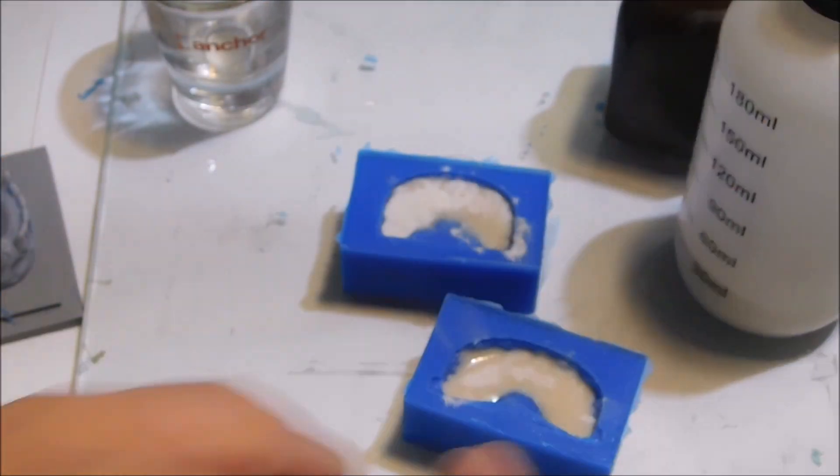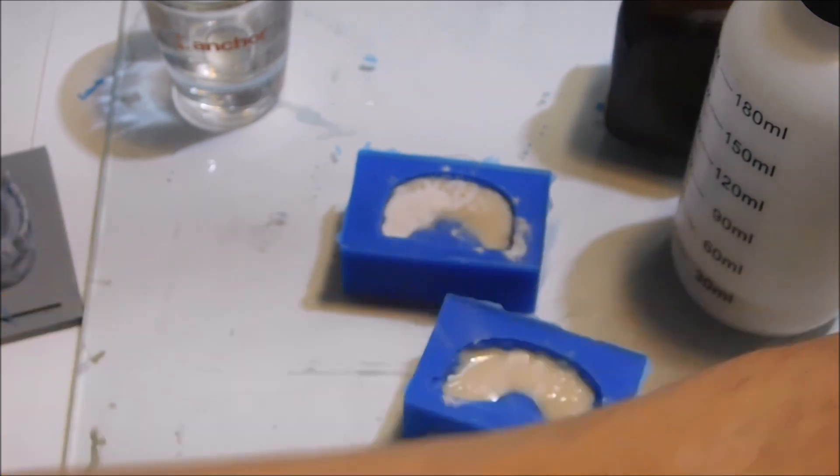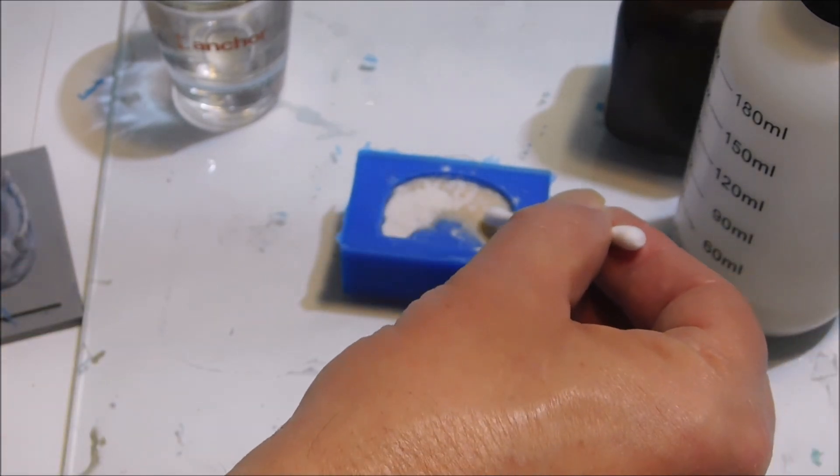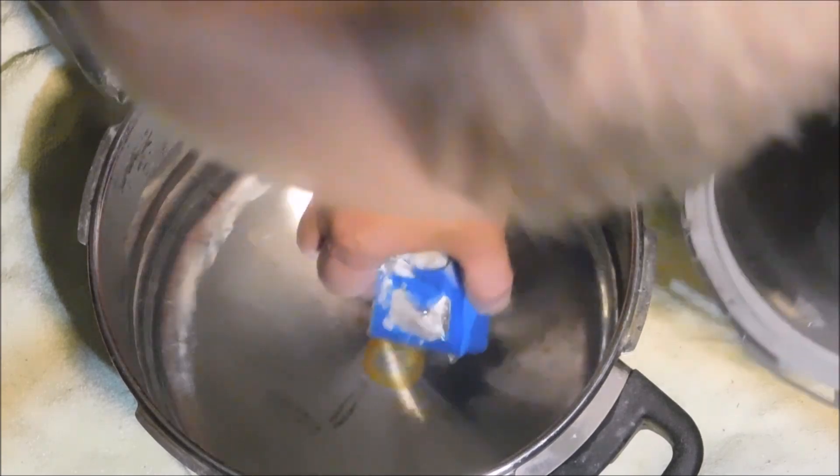When you do this salt and pepper method, you add the monomer and sprinkle some tooth acrylic. You really only have about four or five minutes of work time, and then it starts to cure pretty quick.